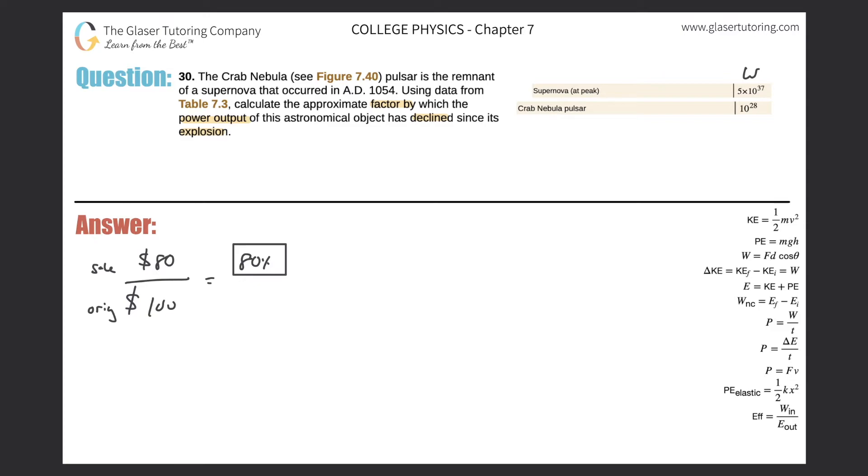So the original value of the supernova at its peak was 5 times 10 to the 37 watts. The pulsar, as it is right now, has a power of 10 raised to the 28 watts.